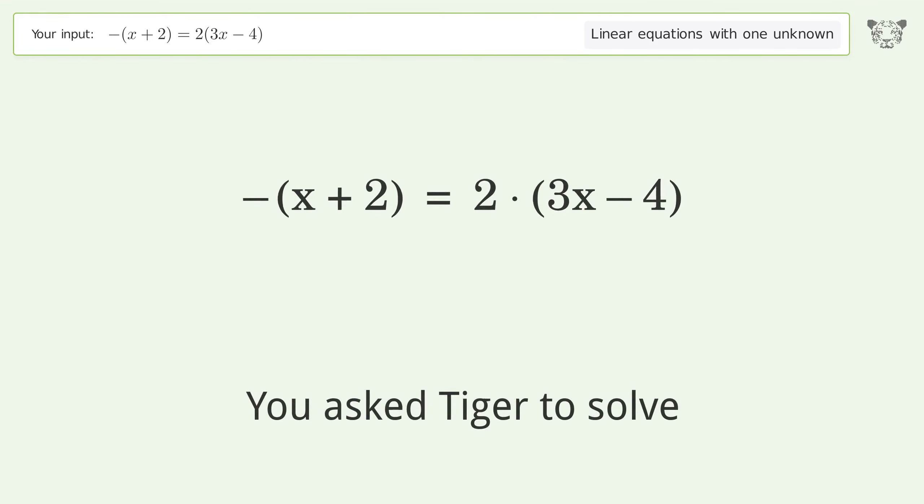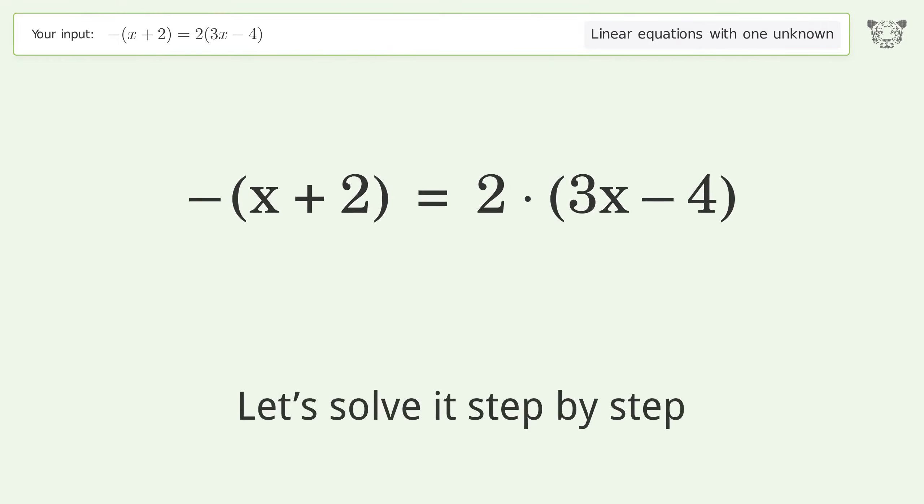You asked Tiger to solve this linear equation with one unknown. The final result is x equals 6 over 7. Let's solve it step by step. Simplify the expression, expand the parentheses.